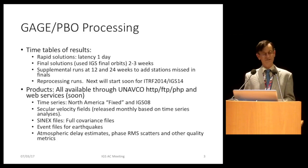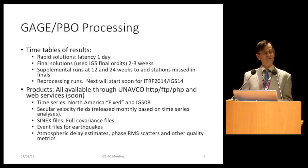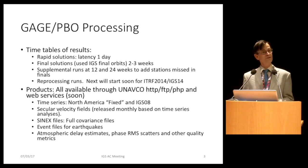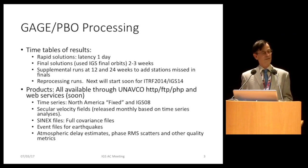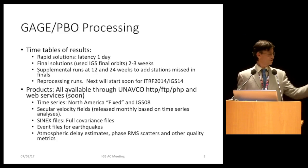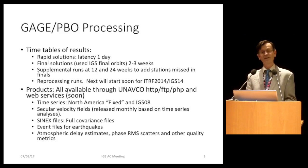We produce select secular velocity fields, now generated monthly across the whole network. We generate Sinex files with full variance-covariance matrices. We have event files for earthquakes — with approximately 1,800 stations processed over the duration, we have about 40 to 45 earthquakes to account for. We also have atmospheric delay estimates, phase RMS qualities, and other quality metrics, some produced by Jeff Flowitz's group at UNR.